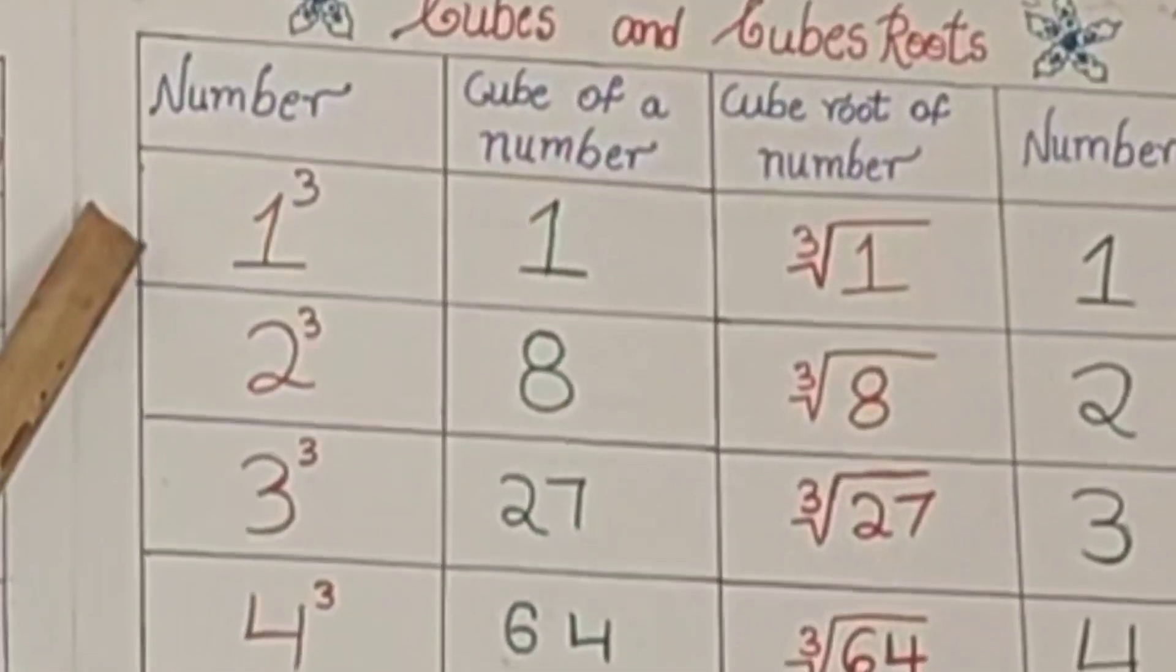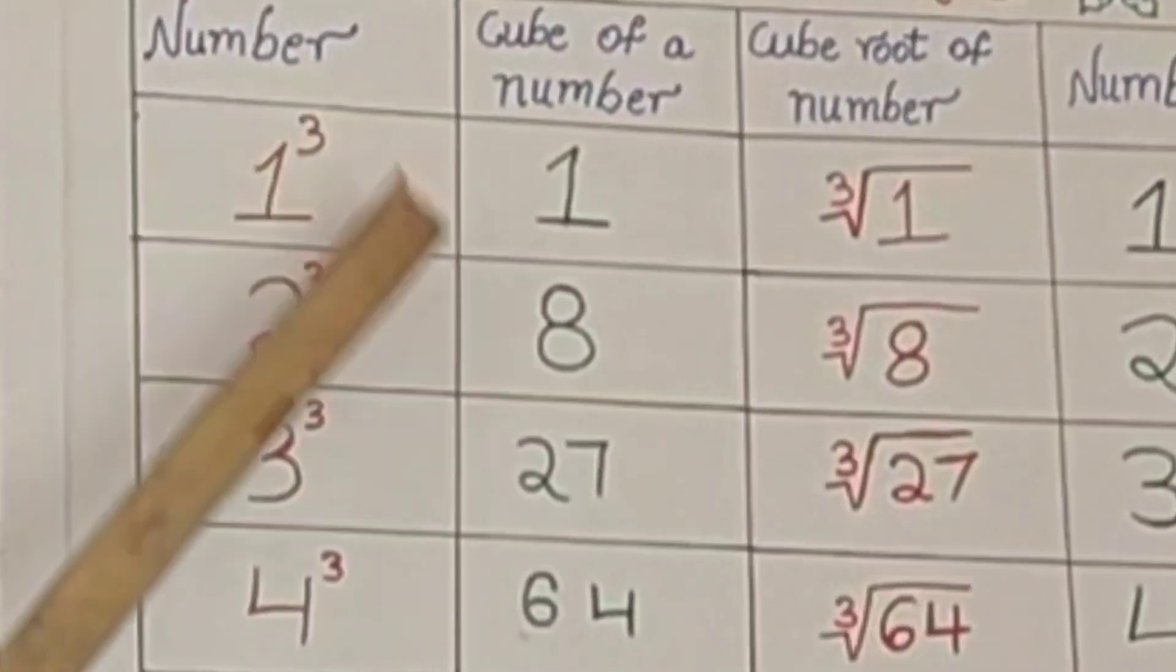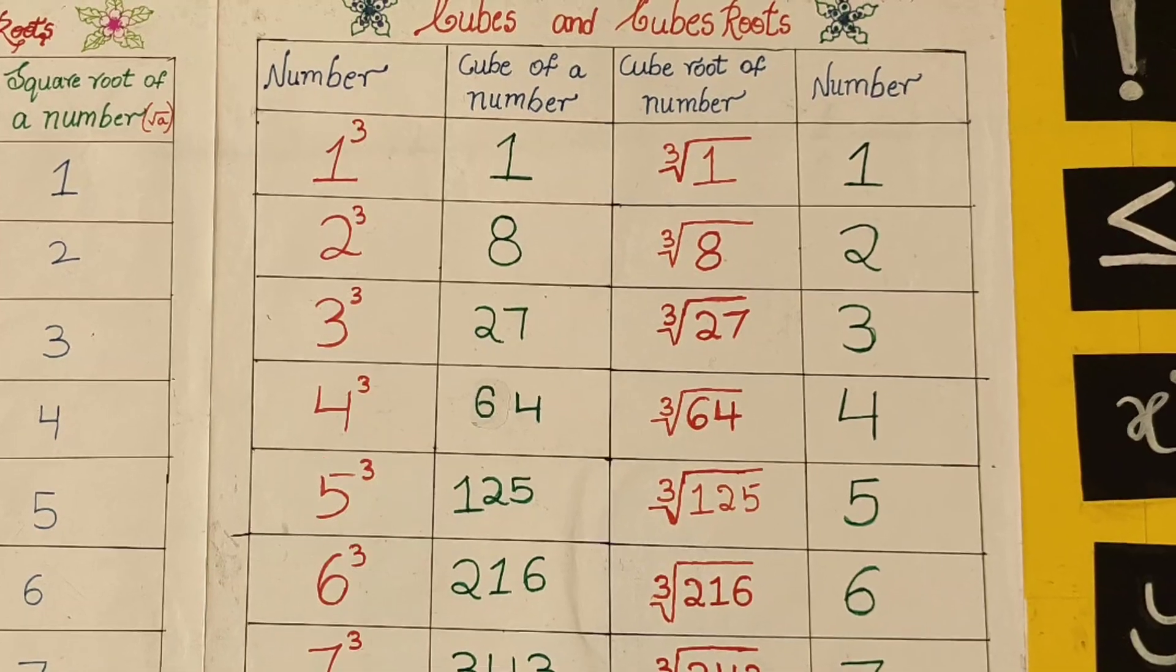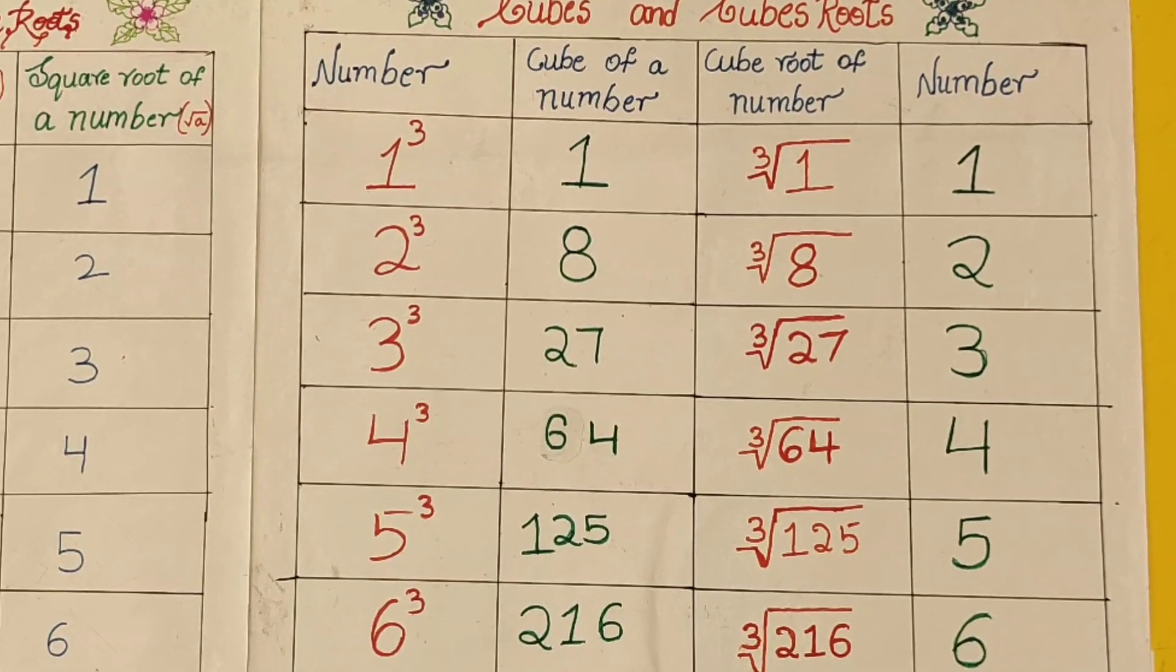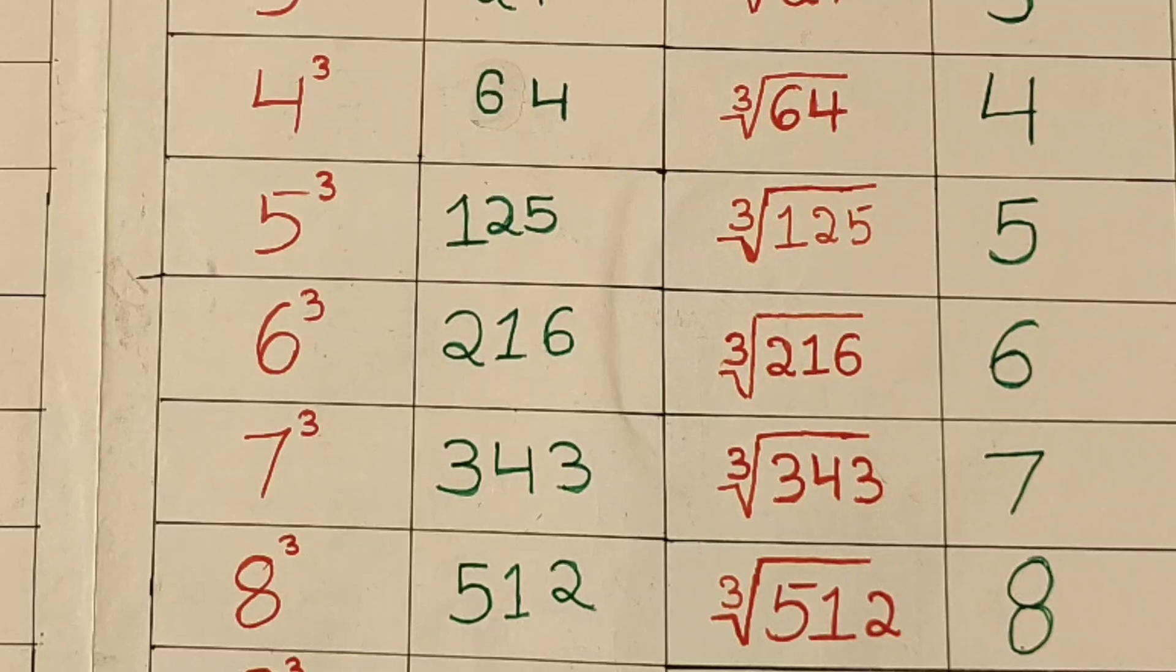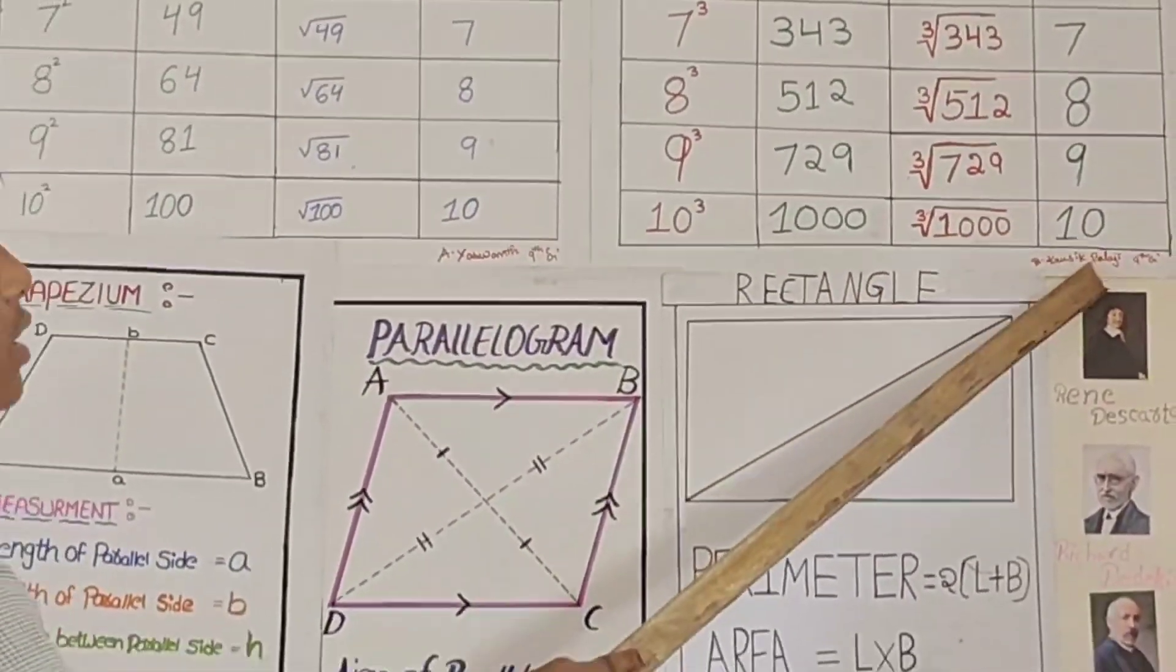Cube and cube roots. Number, cube of a number: 1 cubed is 1, 2 cubed is 8, 3 cubed is 27, 4 cubed is 64, 5 cubed is 125, 6 cubed is 216, 7 cubed is 343, 8 cubed is 512, 9 cubed is 729. Cube root of 1000 is 10.